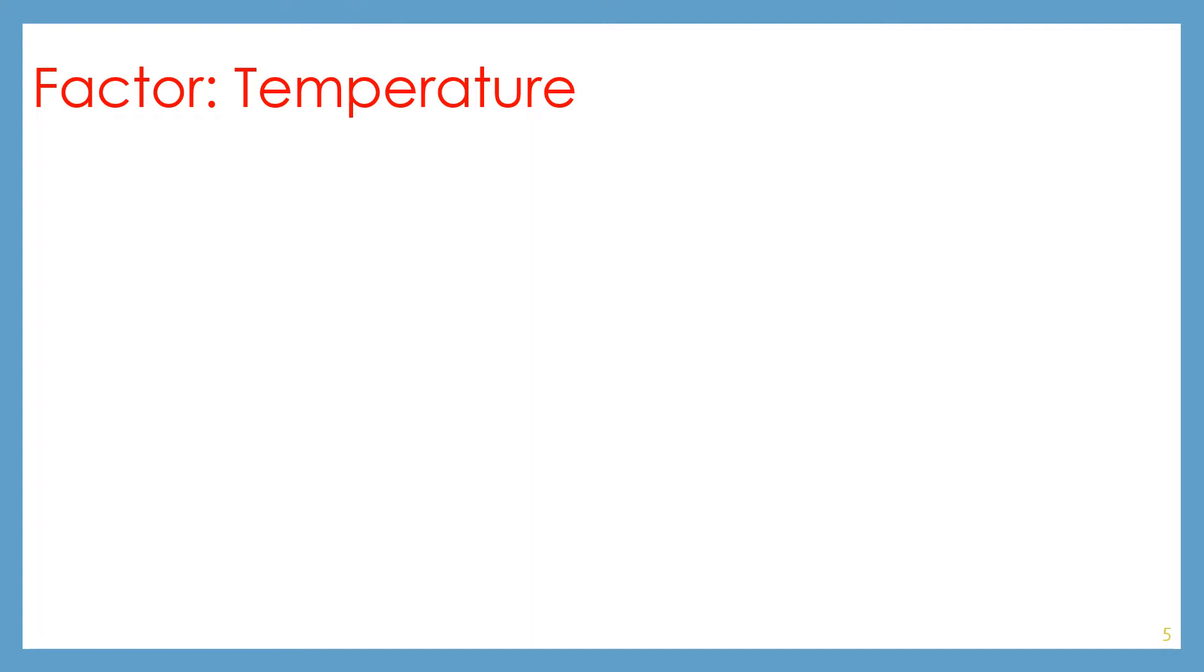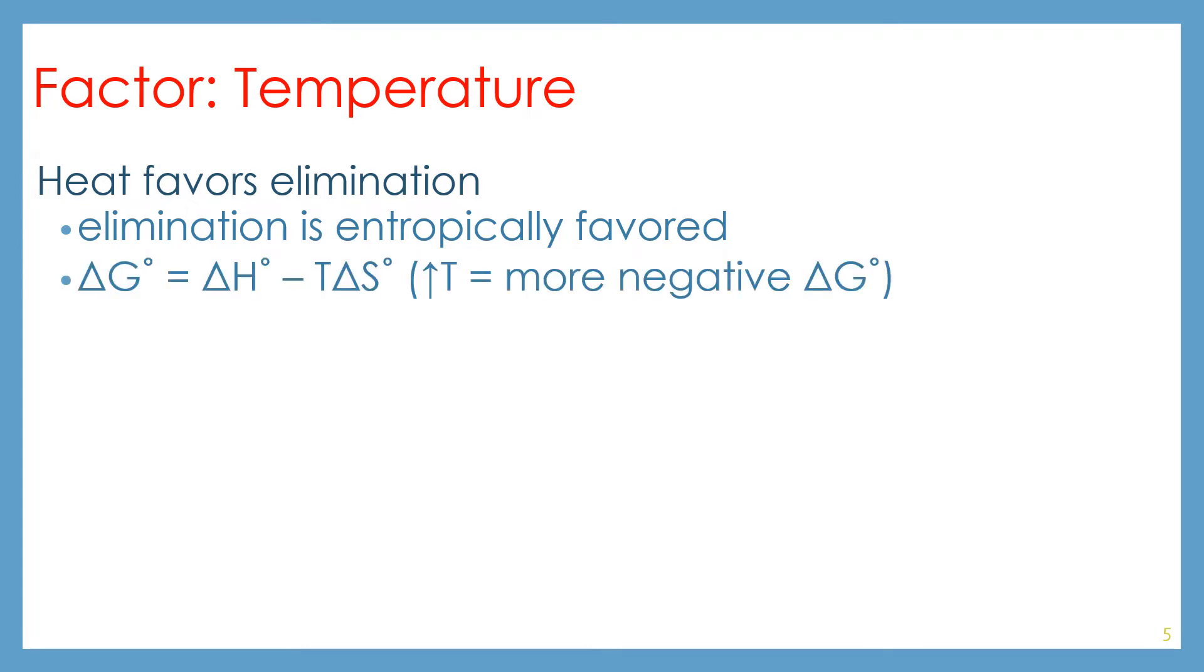Our next factor is temperature, and this one's a really handy little trick. Heat favors elimination. If you want elimination to be the major product, then crank up the temperature. Elimination is favored by entropy, because more molecules are going to be made through elimination than substitution.